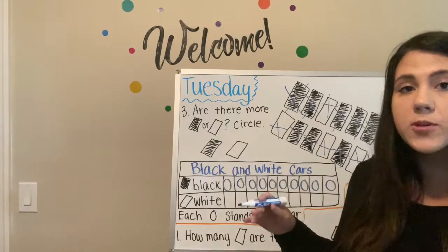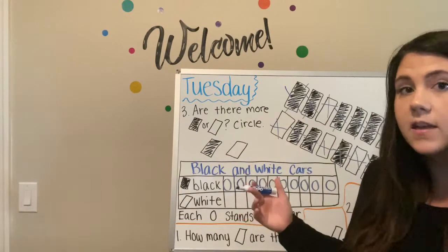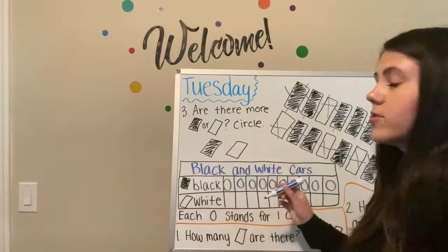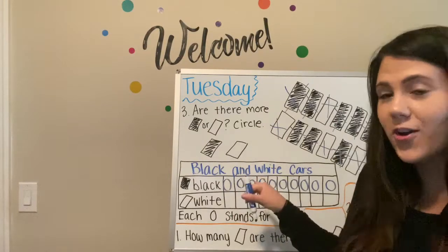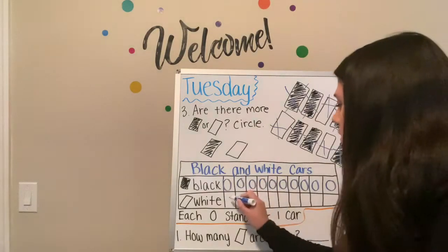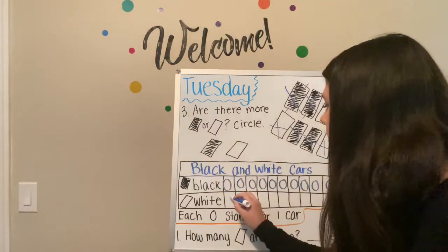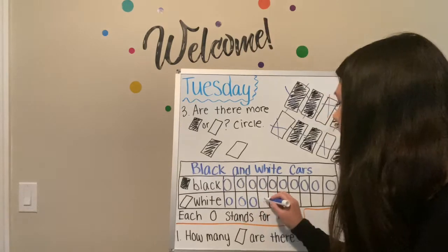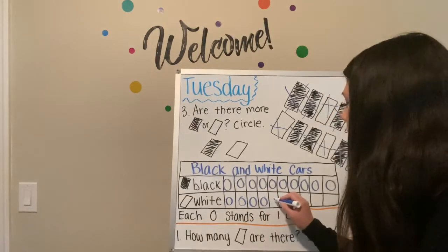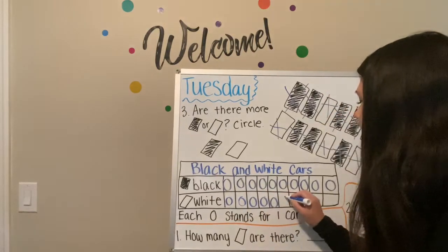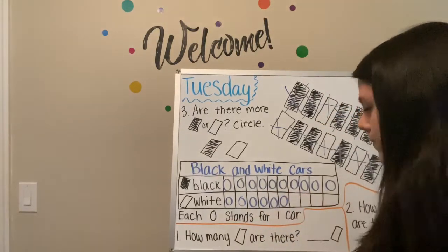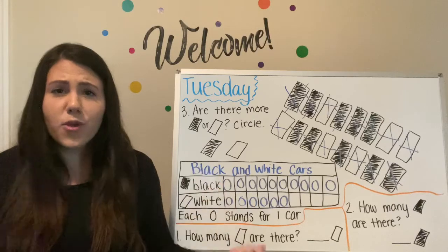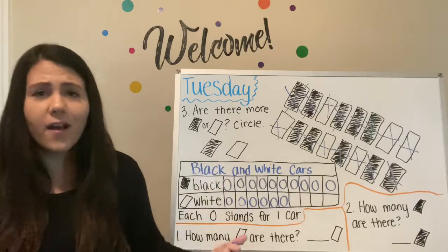We are going to represent six white cars by drawing six circles on our picture graph. One, two, three, four, five, six. Look — you've done your first picture graph! I'm so proud of you. Awesome job.